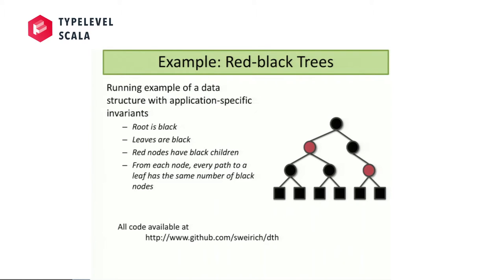Here are the invariants of the red-black tree: it's a binary tree where every node has a color, and as long as these invariants hold we'll call it a red-black tree. The very top node must be black; all the bottom nodes are black; red nodes in the middle must have black children; and as you go from root to all leaves, you have the same black height everywhere. The same black height guarantees the tree is balanced. All of these examples are on my GitHub, DTH for dependently typed Haskell.